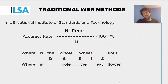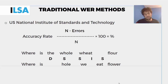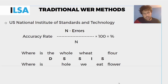Traditional word error rate methods, such as the one used by the US National Institute of Standards and Technology, use this formula: the number of words minus the number of errors, divided by the number of words, multiplied by 100 — and that gives you your accuracy rate.